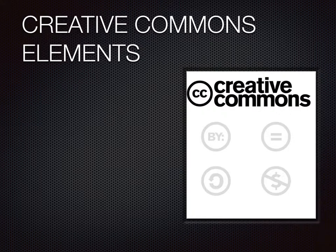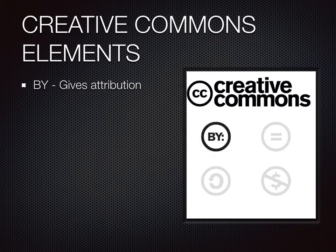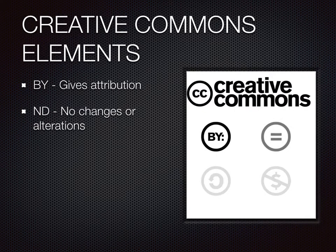Here are the four Creative Commons elements that may or may not be included in a license. The first element is the BY element, which gives attribution to the creator — in other words, it credits the creator for the work they did. It is indicated by the circle with BY in it. The second possible element is the No Derivatives license, which indicates that no changes or alterations may be made to the work. This is indicated by the circle with an equal sign, or ND.